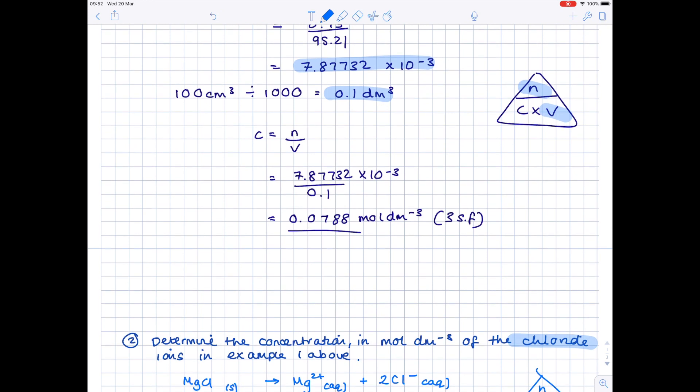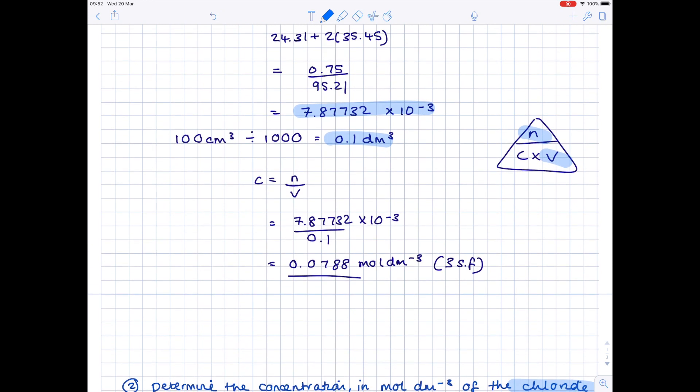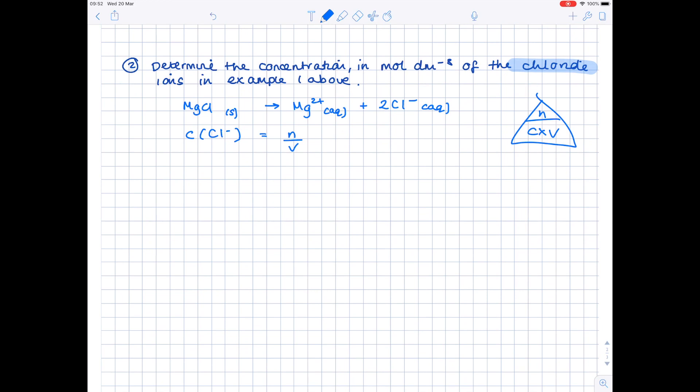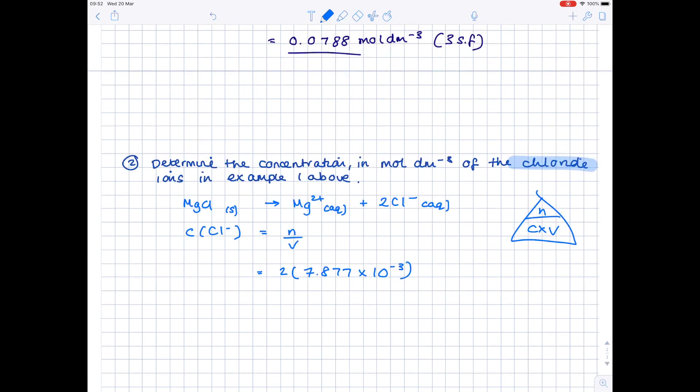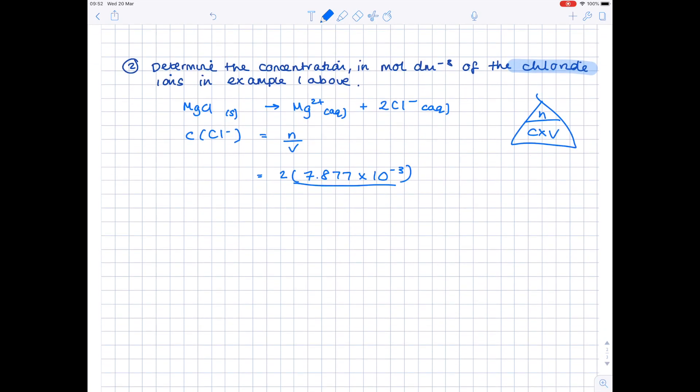Now as we look back up, we can see that our number of moles is highlighted here. However, if you check the ionic equation, you see that you produce 2 lots of the chloride ions, which is why you need to multiply that number of moles by 2. And then divide it by the same volume as before, because nothing's changed. And again, that needs to be decimetres cubed, which is why I'm writing 0.1. And we get a value which is 0.158 mol dm⁻³. Again, to 3 sig fig.